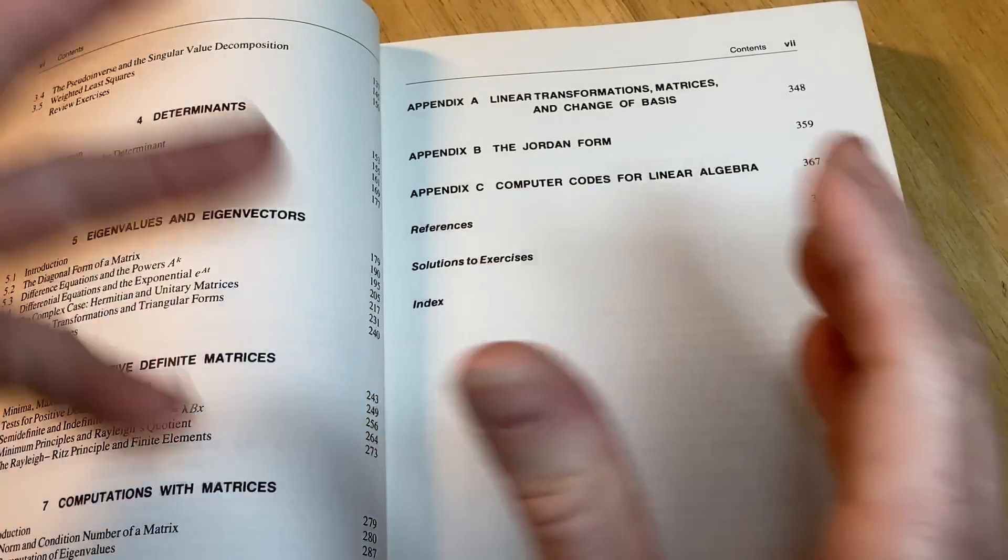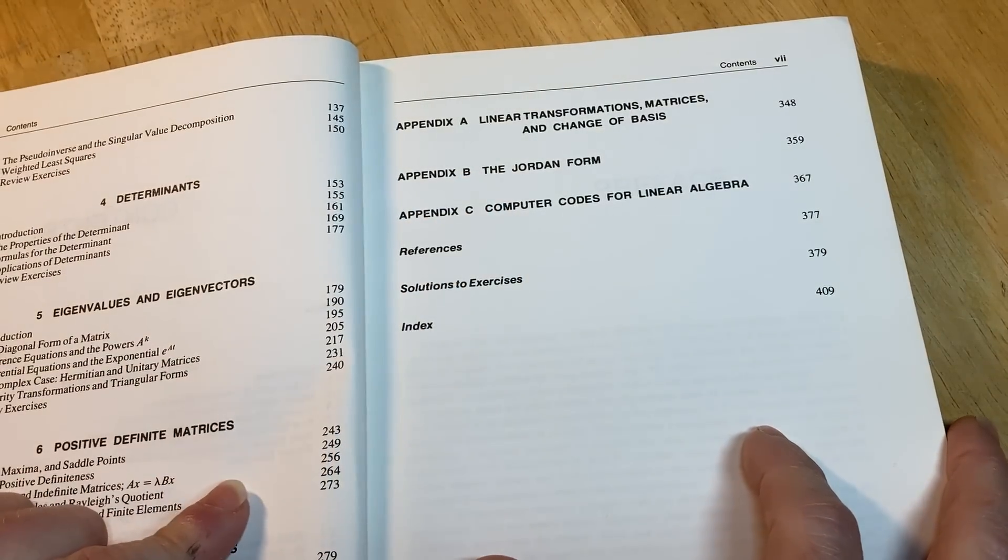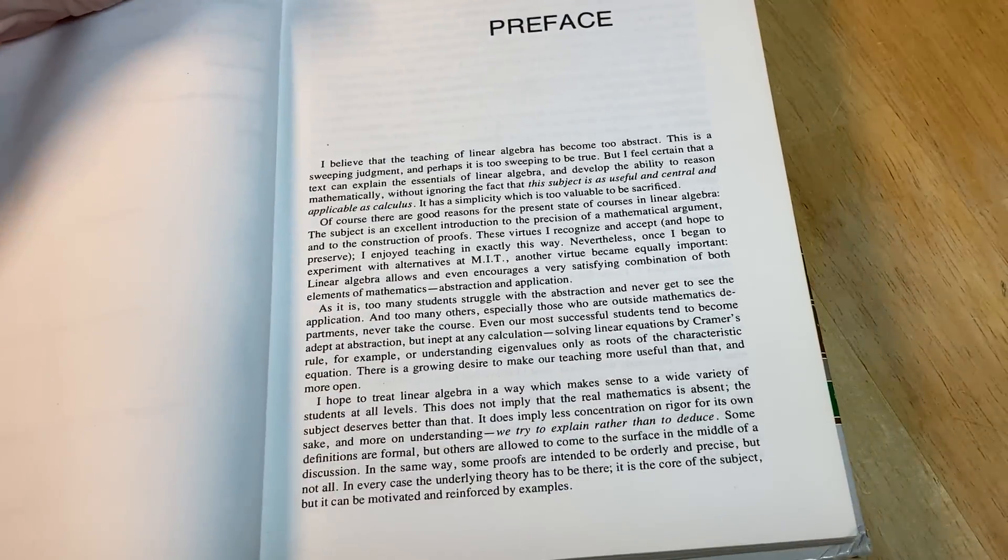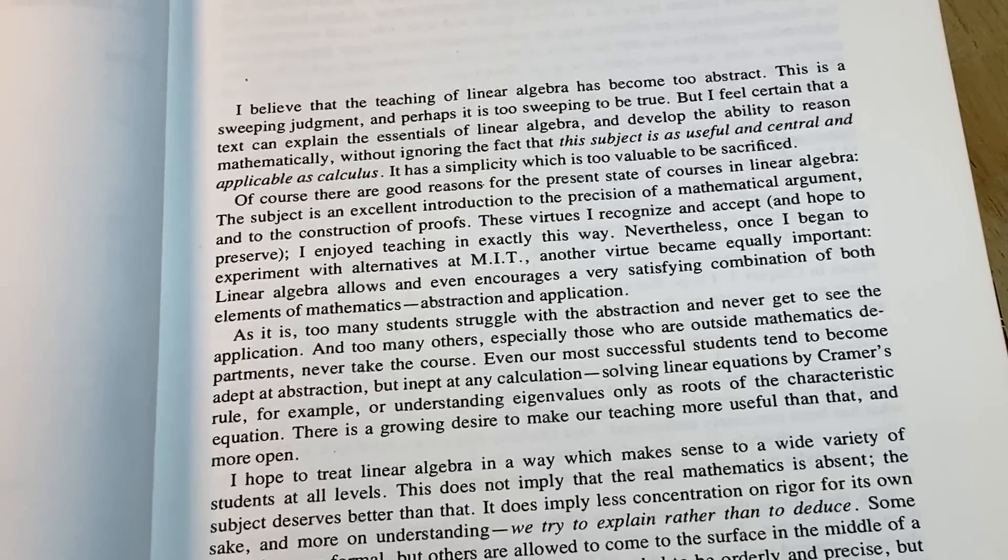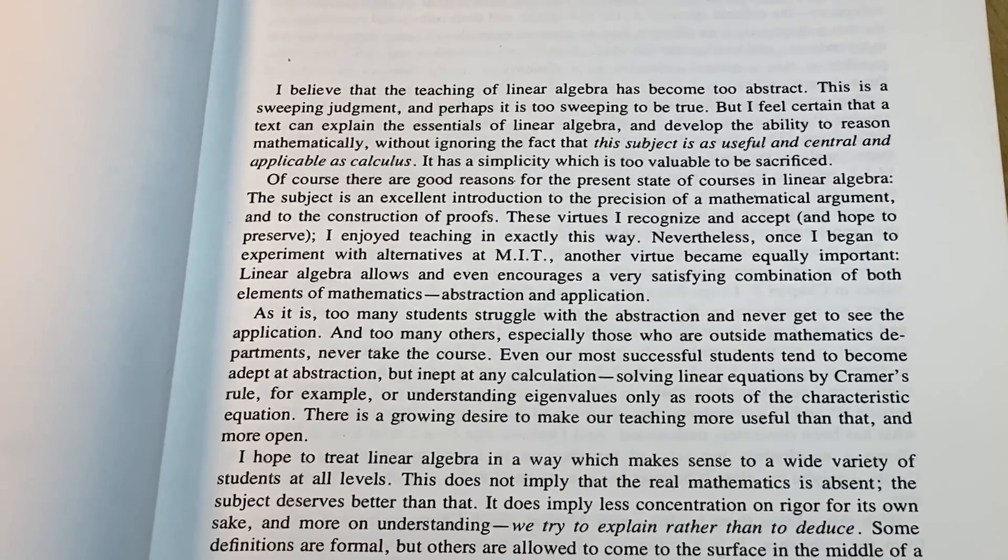He even has an appendix on the Jordan form which is pretty cool, but again this is a computational based book in some sense. It's not meant to be rigorous. Here's what he says about it. It's kind of interesting. I believe that the teaching of linear algebra has become too abstract.